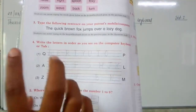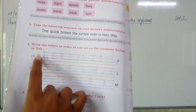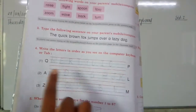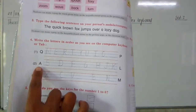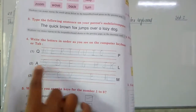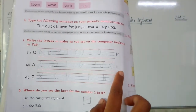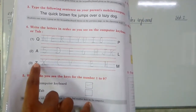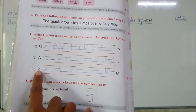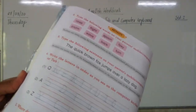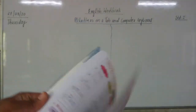There are some letters on the keyboard which start with Q and end with P. The second row starts with A and ends with L. There are some letters which start with capital Z and end with capital M. Which are those letters?